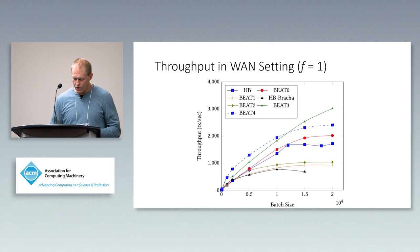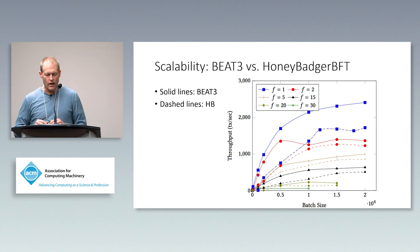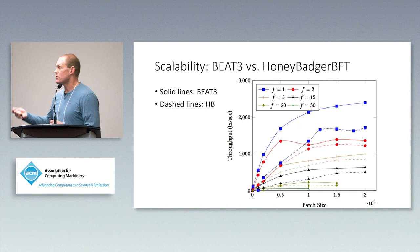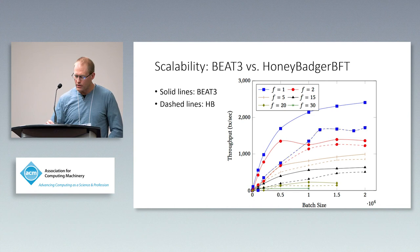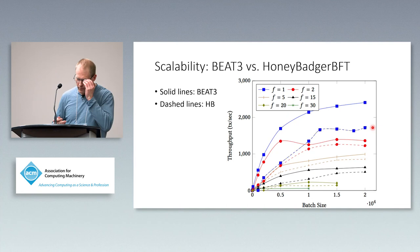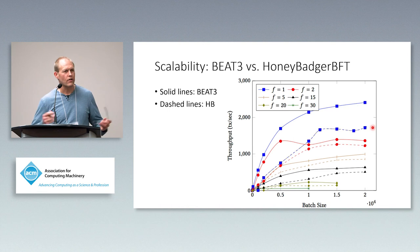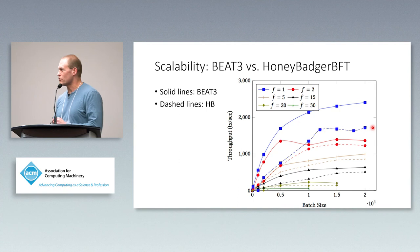Finally, looking at scalability — ramping up the number of replicas, thinking blockchains with many replicas — where f is the number of faults tolerated and the number of replicas is 3f+1. The blue solid and dashed lines are BEAT-3 versus HoneyBadger respectively; red lines are the same for a different value of f. BEAT-3 outperforms HoneyBadger in throughput in each case and scales well.